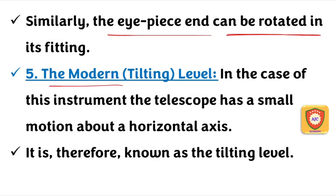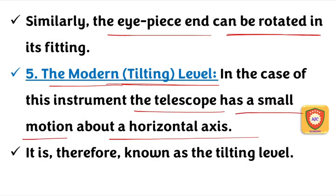The next type is the modern or tilting level. We can move the telescope by a small angle. We rotate the telescope through a small angle about the horizontal axis. This type of leveling instrument is called the tilting level or modern level.